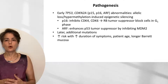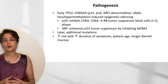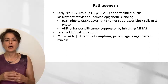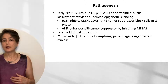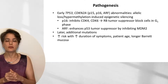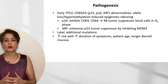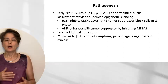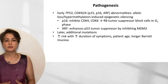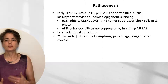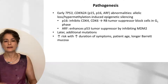ARF plays a role by inhibiting MDM2. MDM2 binds to P53 and degrades it, so if you lose ARF, MDM2 is not inhibited — it attaches to P53, degrades it, and you no longer have our guardian of the genome. With progression, you get additional later mutations, and there's increased risk with increased duration of symptoms, increased patient age, and longer Barrett mucosa.